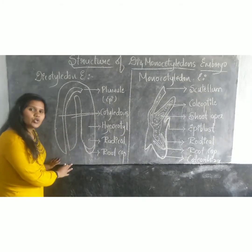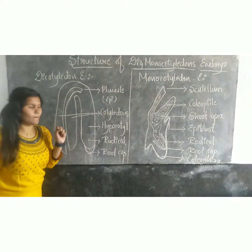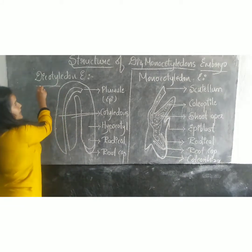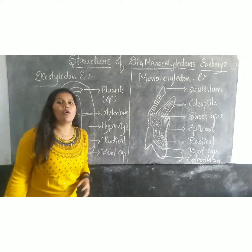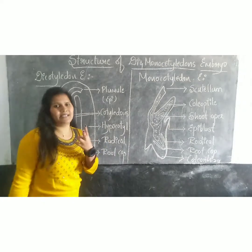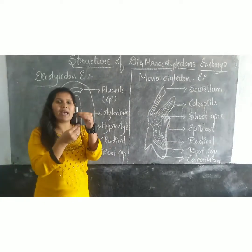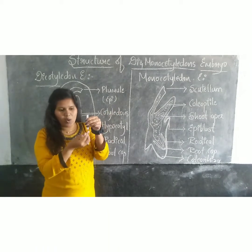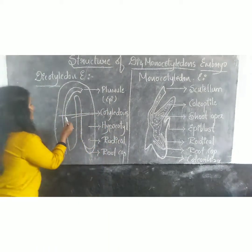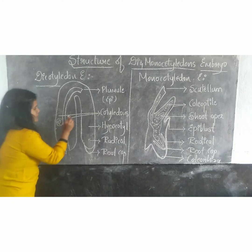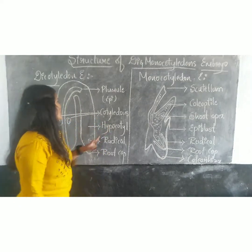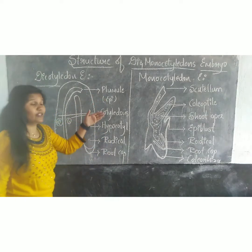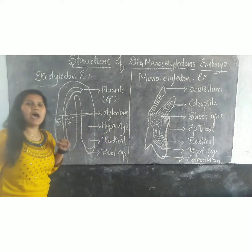This is the typical structure of the Dicotyledon embryo. Typically, the Dicotyledon embryo consists of an embryonic axis. If this is the embryo, it will be having an axis — two axes, where the upper is called as the apicotel and the lower is called the hypocautel. These two are called as the cotteridons. The portion above the cotteridon is called as the apicotel and the portion below the cotteridon is called as the hypocautel.